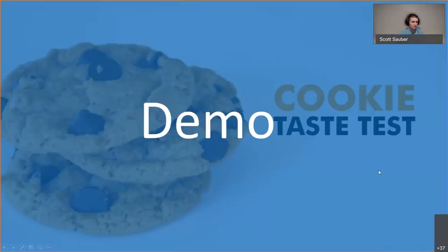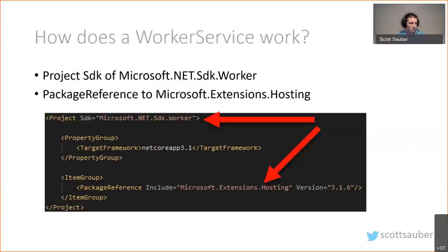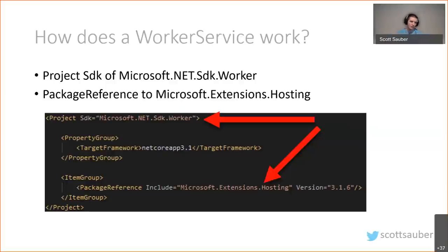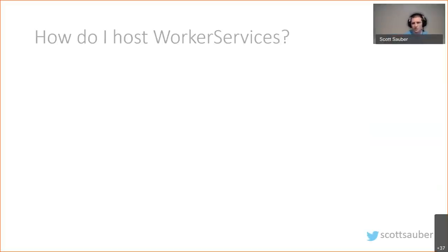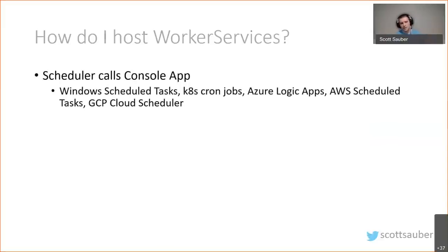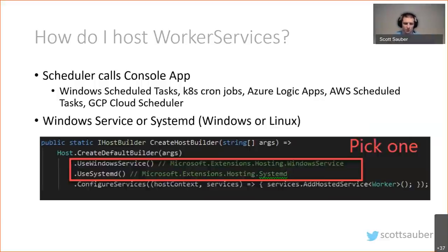In the csproj for a Worker Service, the SDK type is Worker instead of Web, and it automatically adds a package reference to Microsoft.Extensions.Hosting. You can host it via a scheduler calling the exe directly — Windows Scheduled Tasks, Azure Logic Apps, Kubernetes CronJobs, AWS Scheduled Tasks, or GCP Cloud Scheduler — or run it as a Windows Service or systemd service.